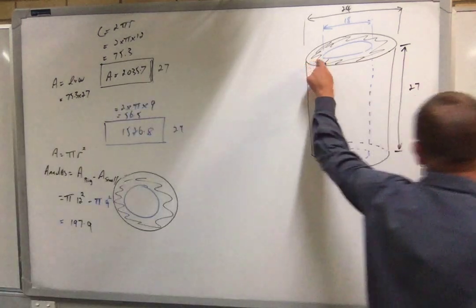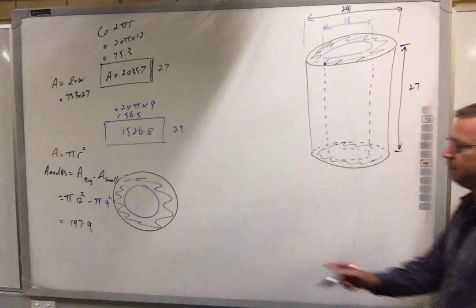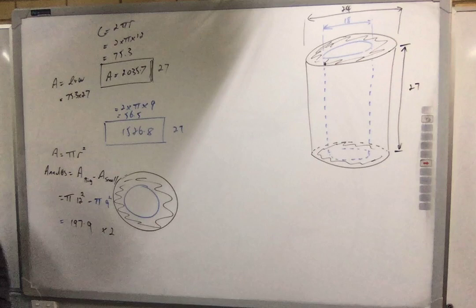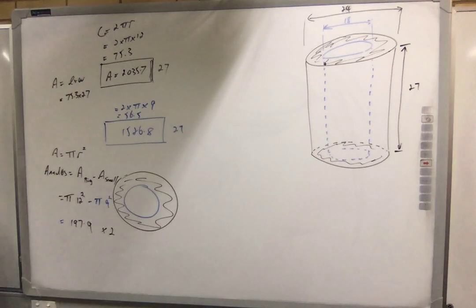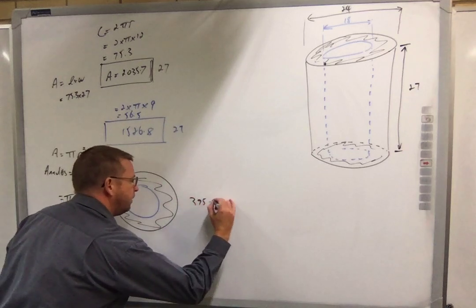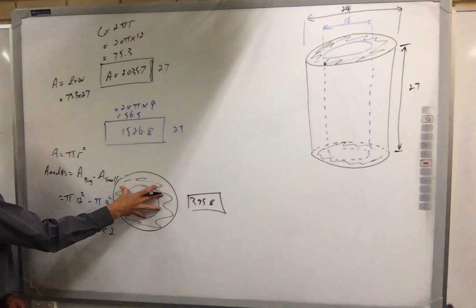That's this area here. What's down here? The same. So how many of these are they? 2. Can you multiply that by 2 please, Sam? So that's the area of the two ends.